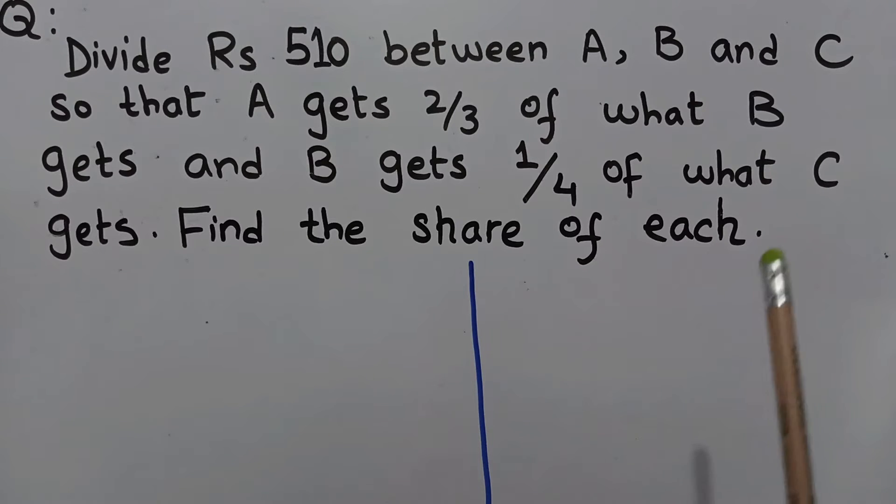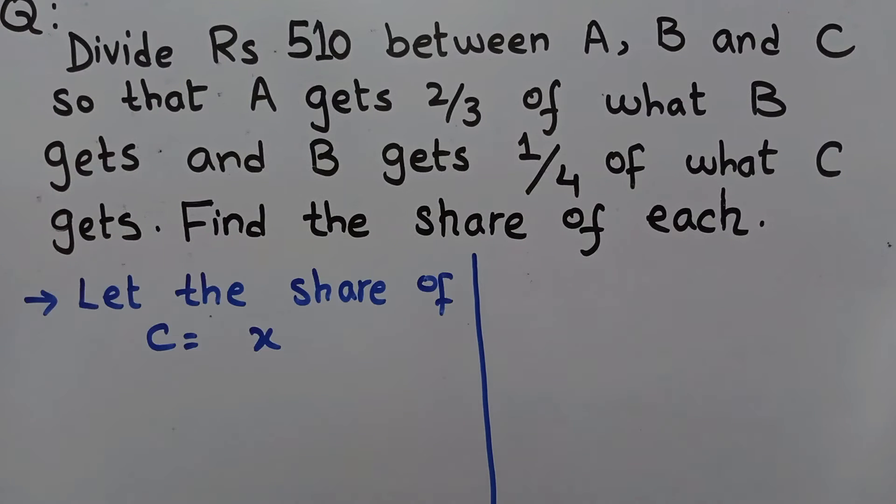First of all, let's consider the share of C. Let's suppose it is X. Then we will find B in terms of C and A in terms of B. Let's suppose that the share of C is X.